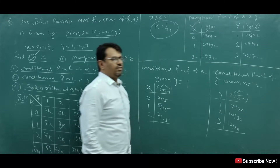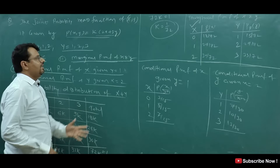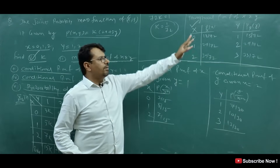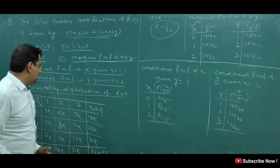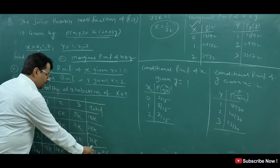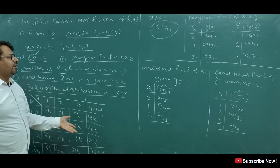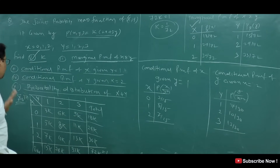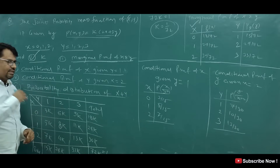So this way we find conditional PMF of X, conditional PMF of Y, marginal PMF of X, marginal PMF of Y, and K value. K value is 1 by 72. The last question is the probability distribution of X plus Y.